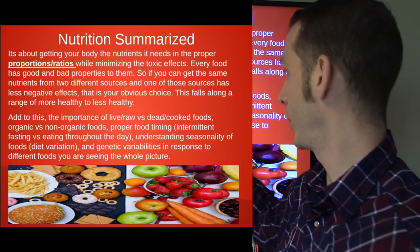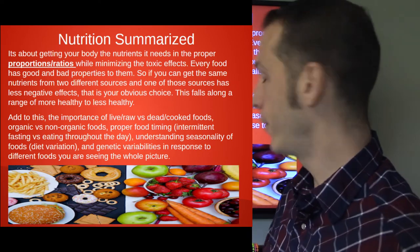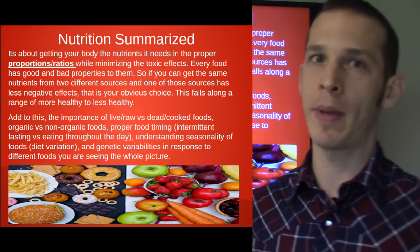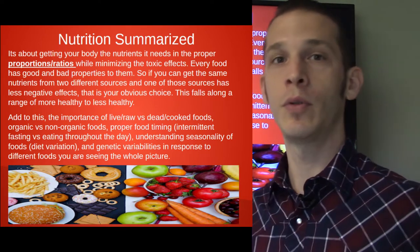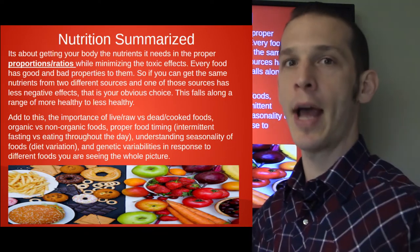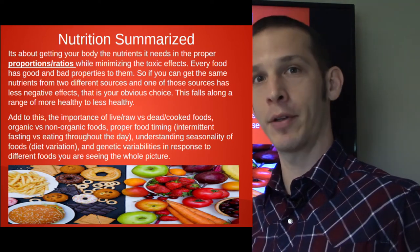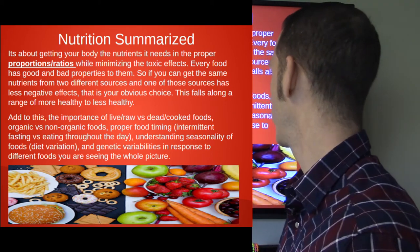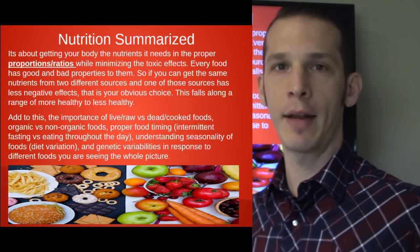Add to this the importance of live or raw versus dead or cooked foods — we'll talk about that. Organic versus non-organic. Proper food timing — when you should be eating, like intermittent fasting versus eating throughout the day. Understanding seasonality of foods — certain foods grow at certain times of the year. Diet variation — changing up your diet depending on the time of year. Genetic variability — certain people have certain blood types and don't handle certain foods well. Understanding what your body responds to well is the whole picture, and it's worth understanding if you're trying to create health in your body.